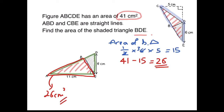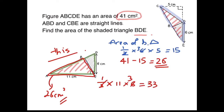So we are still far away from finding BDE, but a little bit closer. Just looking at this diagram, how can we find the shaded part? First of all, I need to find the area of the green triangle, which is half times base 11, times height 6, which is 33. So the area of the green triangle is 33.